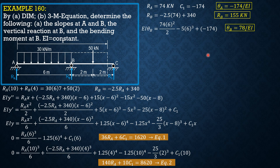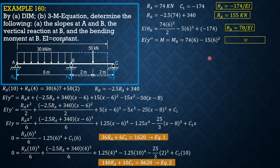For the bending moment at B, we use the elastic curve equation. EI y double prime represents moment, and we set X equals 6. So moment at B equals RA (74) times 6, minus 15 times 6 squared. Therefore MB equals 96 kN·m.